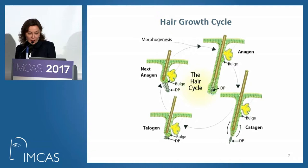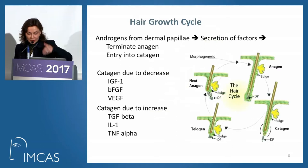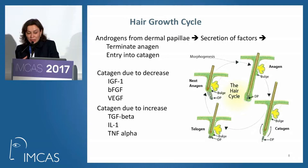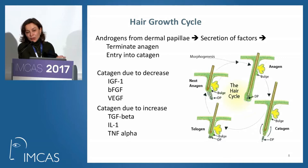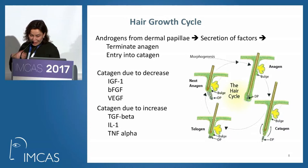The hair growth cycle goes anagen, catagen, telogen, and then re-enters anagen. Androgens acting from the dermal papilla lead to secretion of factors which terminate anagen and drive entry into catagen. There are also growth factors that play a role in continuing anagen.